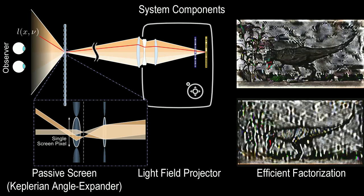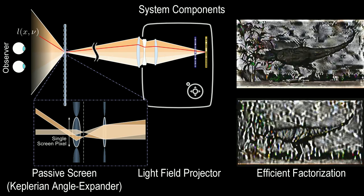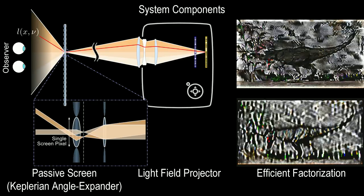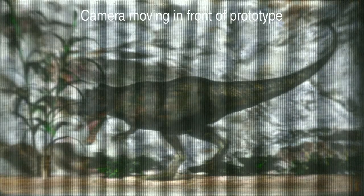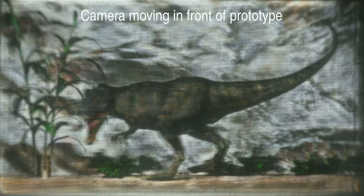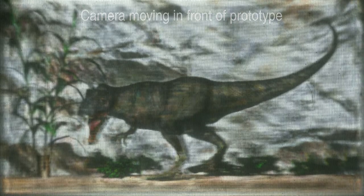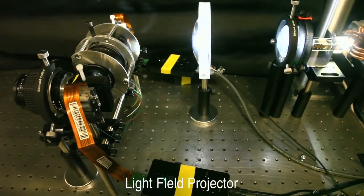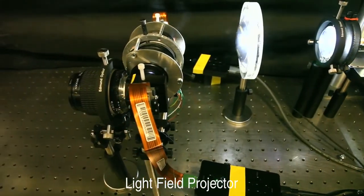Light field factorization is used to decompose a target light field into a set of time-multiplexed patterns that are shown at high speed on the spatial light modulators. Here is a result captured from our prototype. Although the resolution is relatively low, parallax is visible within the field of view allowed by our light field projector constructed from commodity parts.